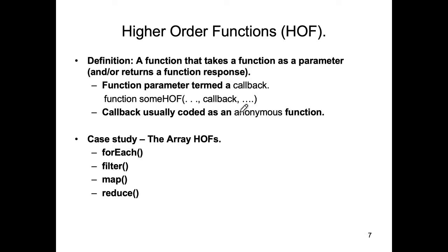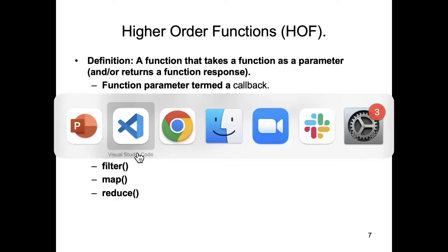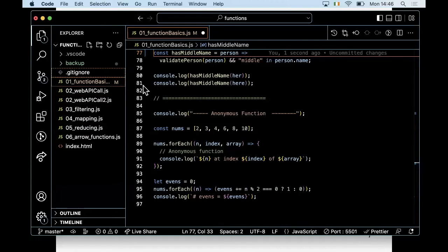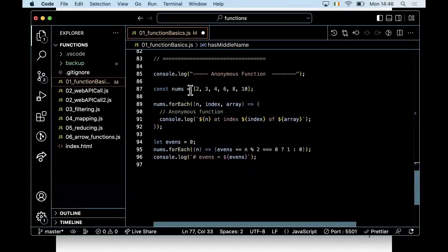By way of example, I'll talk about higher order functions in the context of the array data type, because it has a whole series of methods that expect a callback as one of their parameters. The simplest one is 'forEach'. I've got a simple array, and the 'forEach' method expects a callback — just a function — as its only argument.